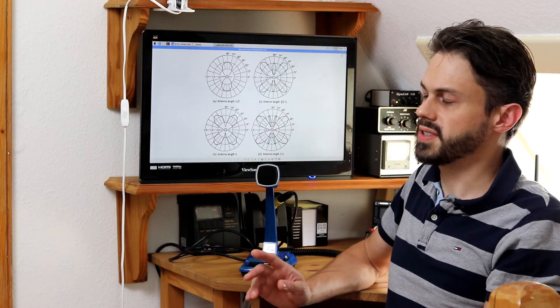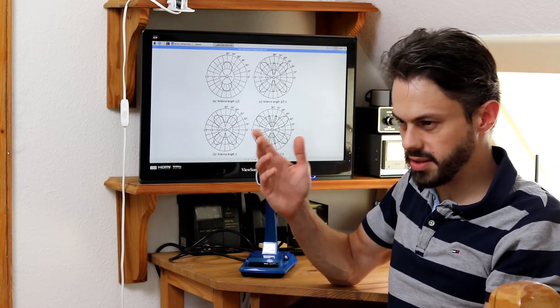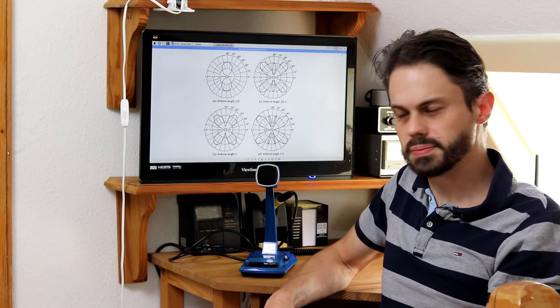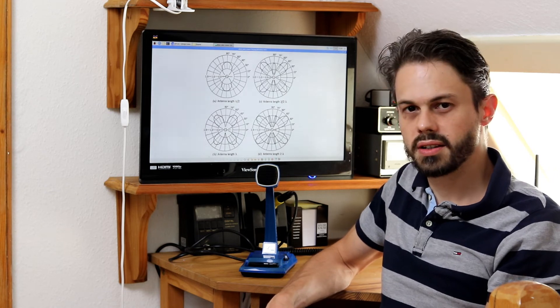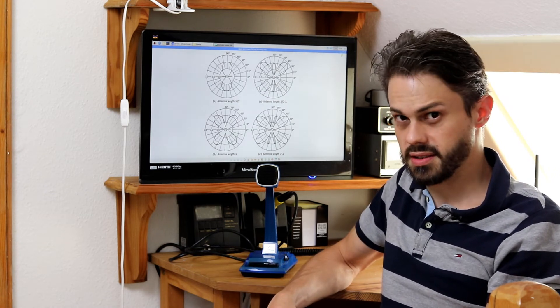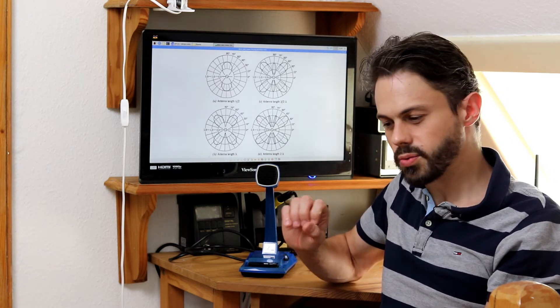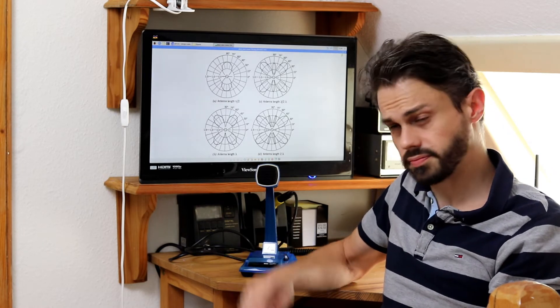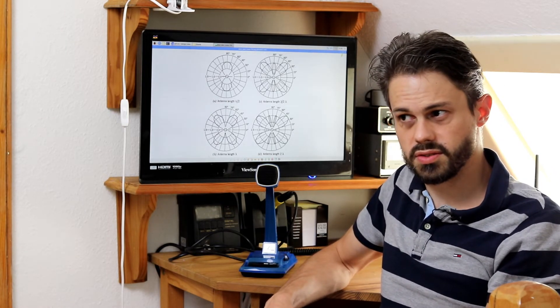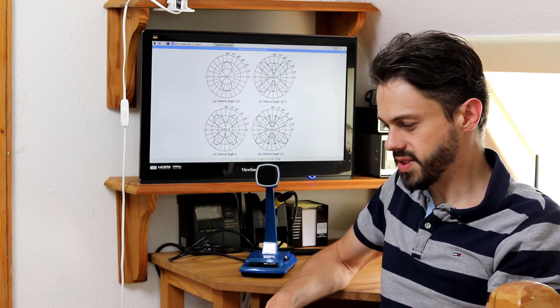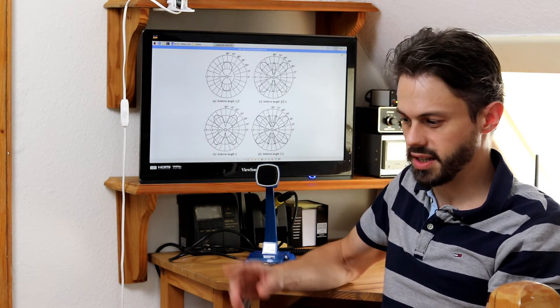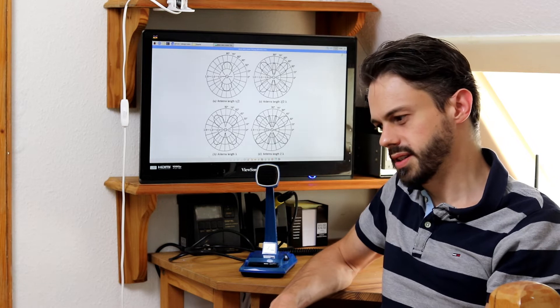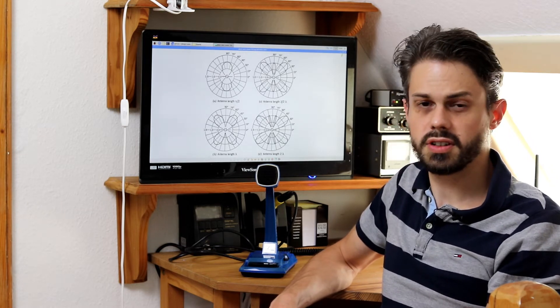And I noticed specifically when I use the doublet antenna, so that means a dipole kind of random length dipole with an antenna tuner. Of course I could tune it for every band, that's not the issue. But the problem is that it worked really really well on the resonant band. So for example if I had two times 20 meters, each side 20 meters long, then it would work really great on the 80 meter band but not so good on the 40 meter band.